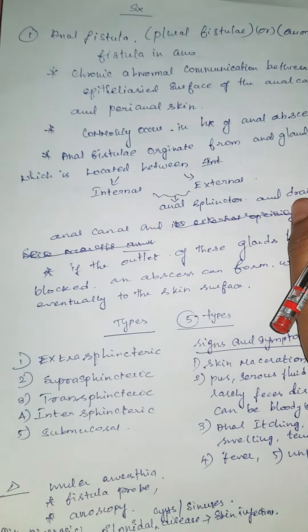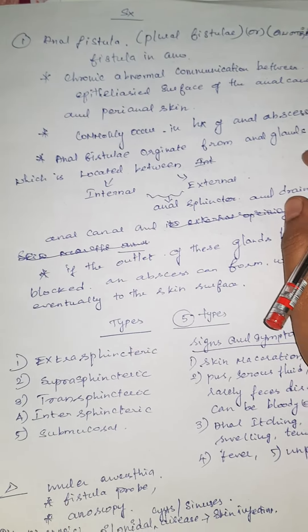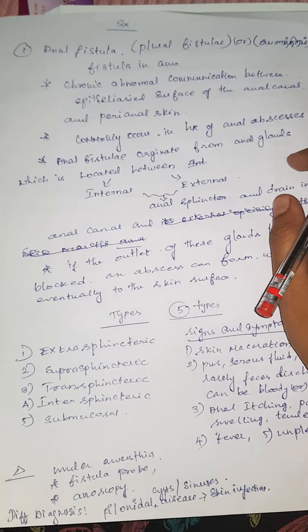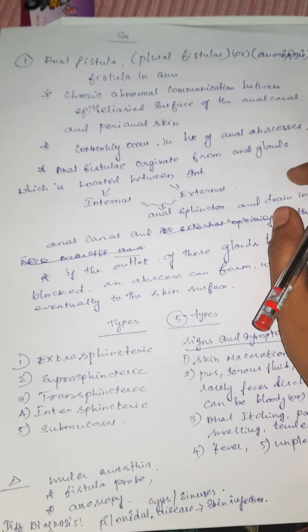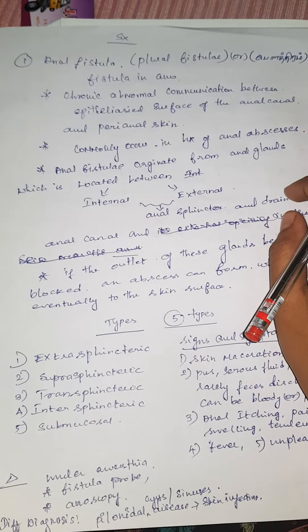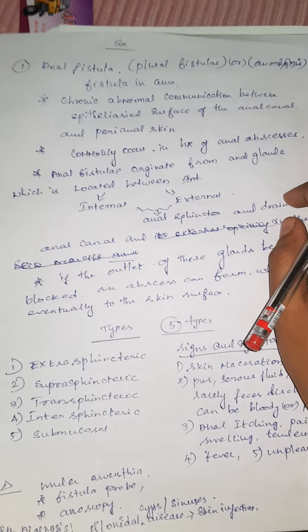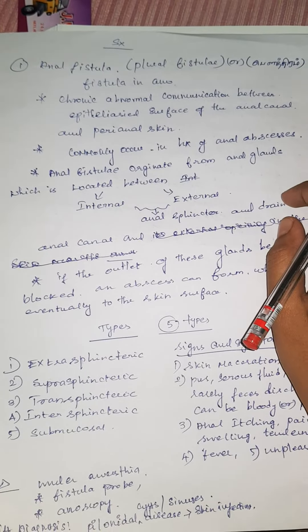Today we are going to see anal fistula in surgery. Anal fistula is a chronic abnormal communication between the epithelized surface of the anal canal and perianal skin.